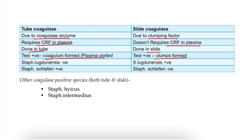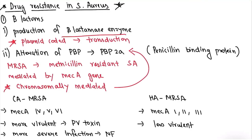Staph. lugdunensis is tube-coagulase negative but slide-coagulase positive; Staph. schleiferi is the opposite — tube positive, slide negative. Staph. hyicus and Staph. intermedius are both tube and slide coagulase positive. Staph. aureus is positive for both tube and slide coagulase.